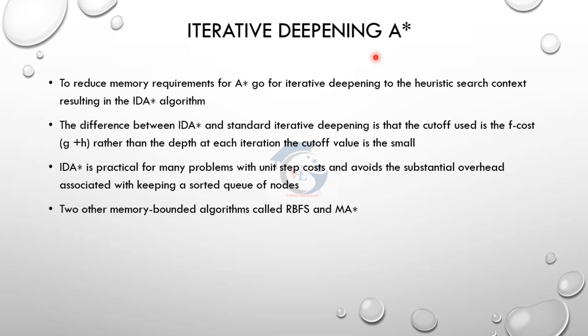Now we use iterative deepening A* search. The benefit of iterative deepening A* is its reduced memory requirement, making it better than standard A* search. The difference is: iterative deepening A* uses f-cost as the basis for cutoff, whereas standard iterative deepening uses a depth limit as cutoff.